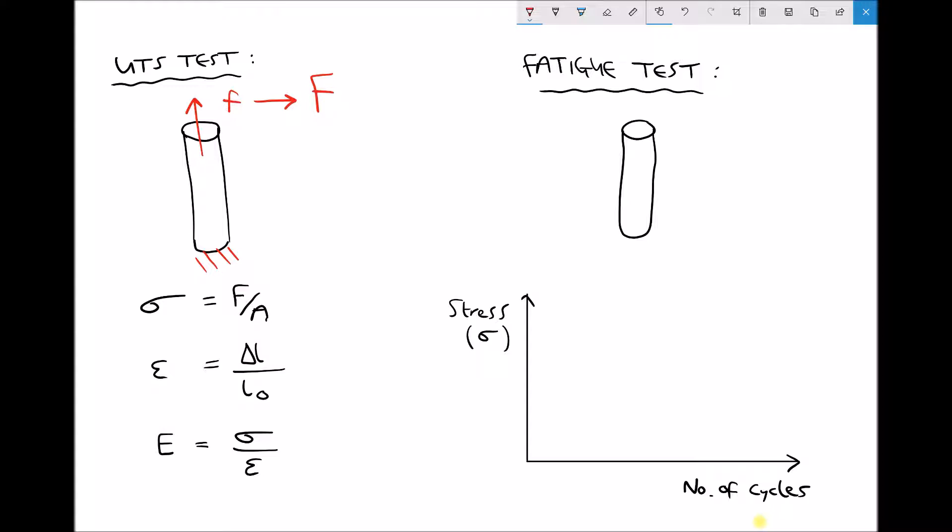Now there's a couple of differences with fatigue testing, but first of all the bottom of our test piece is still going to be fixed and we're still going to apply a force to the top of our test piece. The difference this time is that the force is going to be applied and then removed and then applied and then removed. So what we have instead is cyclic loading as opposed to the gradual loading that we see in a UTS test.